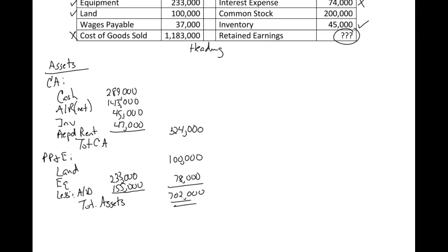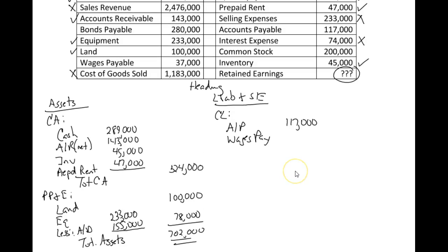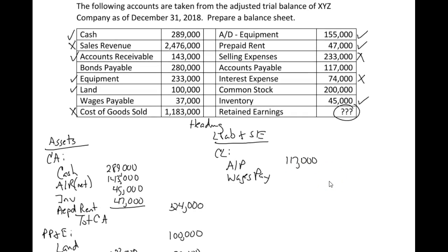Now I'm going to do the liability and stockholders' equity section. We'll start with our current liabilities — we have accounts payable and wages payable. Accounts payable was $117,000 and wages payable was $37,000. That gives us total current liabilities of $154,000.